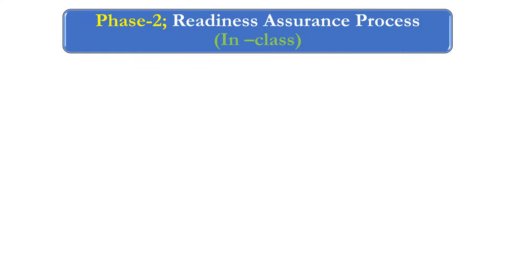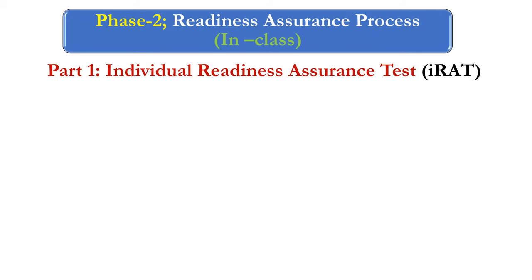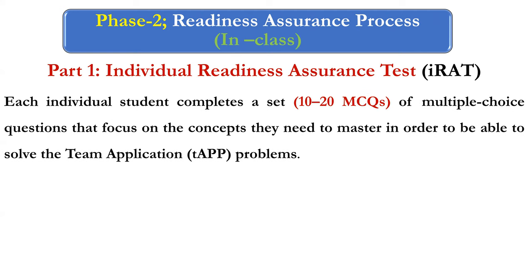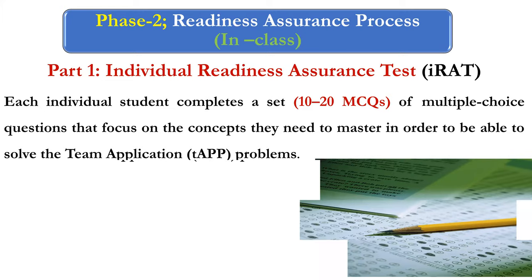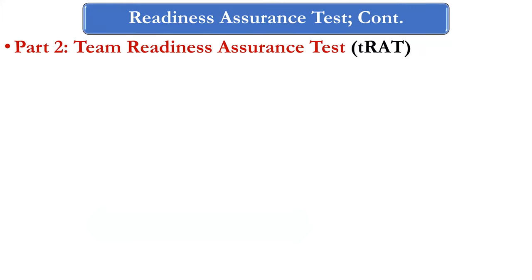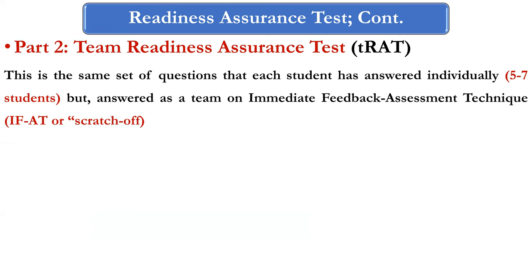Phase two is the readiness assurance process, conducted inside the class. It is composed of three parts. The first part is the individual readiness assurance test, called IRAT — each individual student completes a set of 10 to 20 MCQ questions that focus on the concepts they need to master in order to solve team application problems. The second part is the team readiness assurance test, called T-RAT — the same set of questions now answered as a team using an immediate feedback assessment technique or scratch-off card.